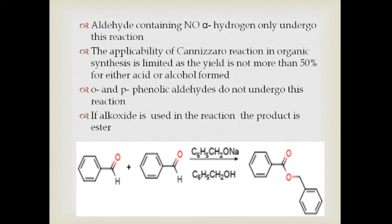Since two compounds are formed simultaneously, the yields of each — that is, alcohol as well as acid — will be less than 50 percent. Also, certain ortho and para phenolic aldehydes do not undergo Cannizzaro's reaction. If the same reaction is carried out in the presence of an alkoxide base instead of KOH, the product obtained is an ester — this is another named reaction we shall see later.